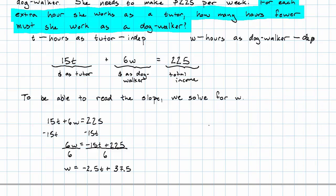So, for every hour she works as a tutor, how many fewer hours must she work as a dog walker? This is the slope when we treat T as our independent variable. So, our answer is 2.5 fewer hours.